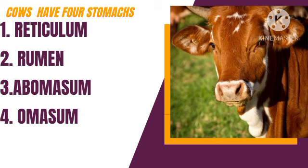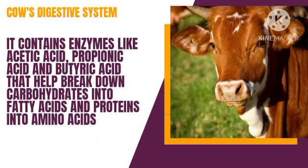The first stomach is known as the rumen where fermentation occurs. When a cow consumes grass, the grass is taken to the rumen where it ferments. Then after it ferments, the cow will bring it back into the mouth and break it down by chewing, and it will swallow for the second time.